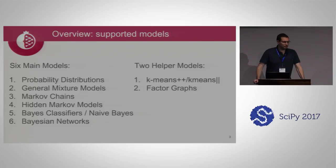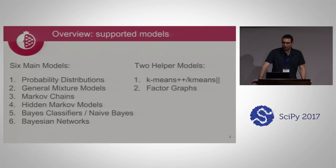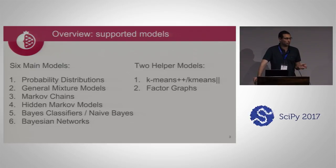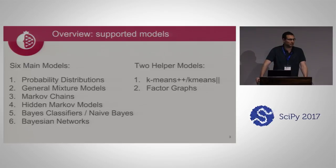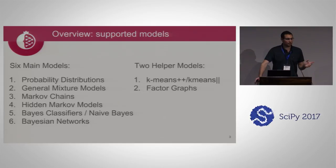One of the core tenets of Pomegranate is that even though these are six separate things, they're all kind of really the same thing — they all represent probability distributions. A mixture model is really just a complex distribution. A hidden Markov model is just a distribution over sequences, and a Bayesian network is literally a probability distribution that's been factored along a graphical structure. This core insight informs basically how all of Pomegranate works.